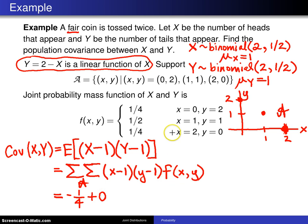Then finally for the last piece, that is X equals 2 and Y equals 0, we get (2 minus 1), which is positive 1, multiplied by (0 minus 1), which is negative 1. So 1 times negative 1 times f(2, 0), which is 1/4, gives you negative 1/4. So negative 1/4 plus 0 minus 1/4 is negative 1/2, and that is the population covariance.